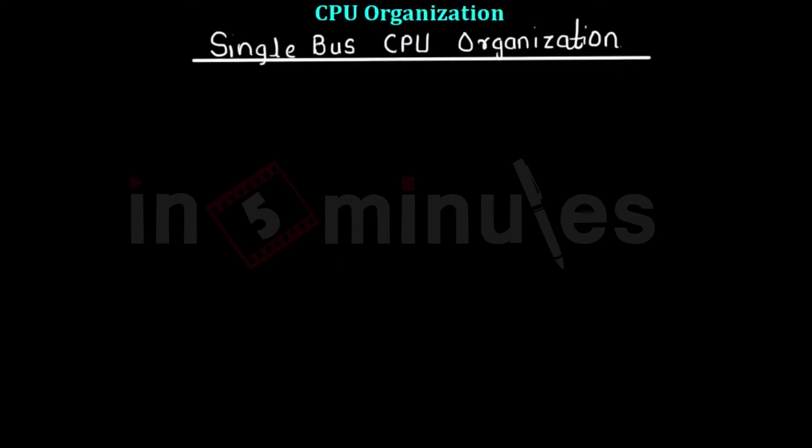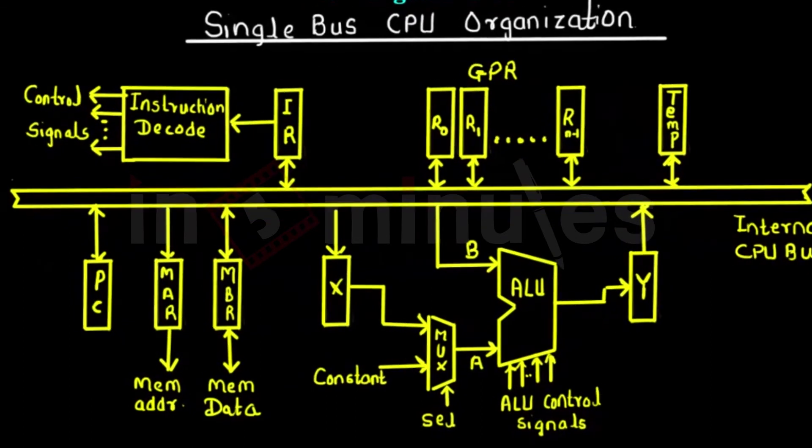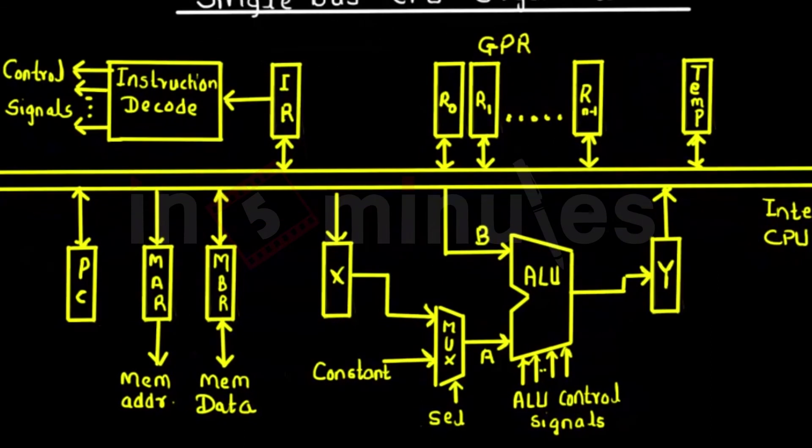Now let's look at the single bus CPU organization. In the CPU there is a single bus present inside the CPU which is the internal CPU bus. Let's look at the organization that is built around it. We have already seen the different registers and components.